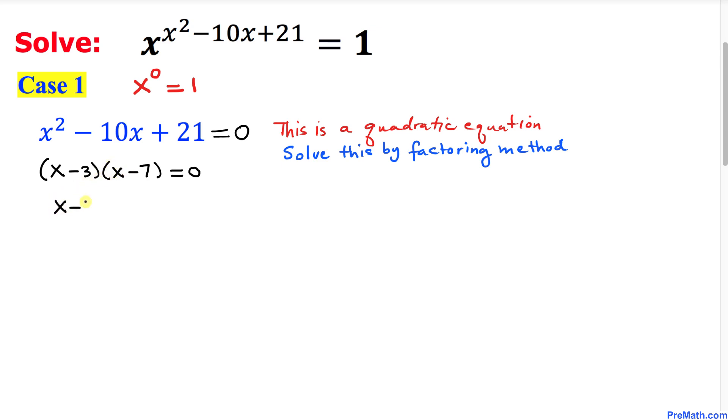I can write x minus 3 equal to 0 and the other factor x minus 7 equal to 0. So that means our x value turns out to be positive 3 and the other value is going to be x equal to positive 7.